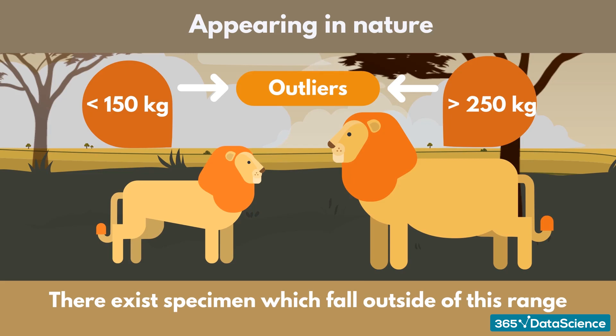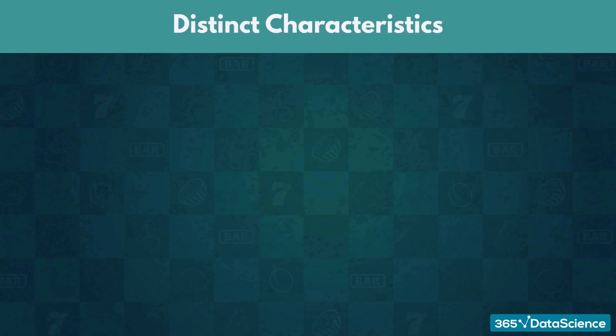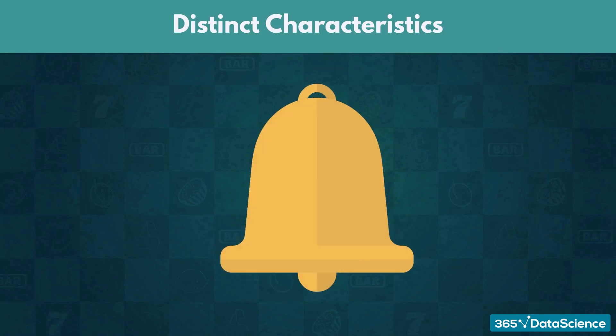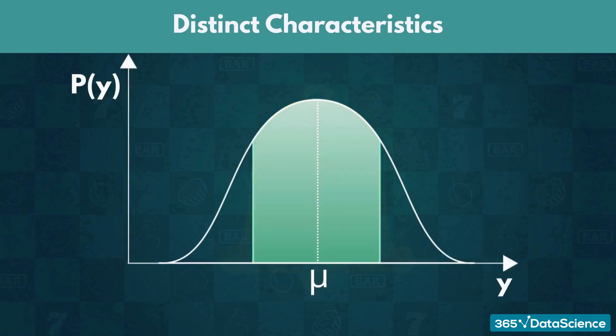Now that you know what types of events follow a normal distribution, let us examine some of its distinct characteristics. For starters, the graph of a normal distribution is bell-shaped. Therefore, the majority of the data is centered around the mean.